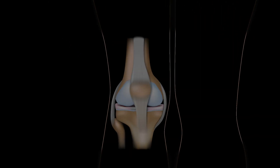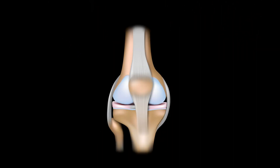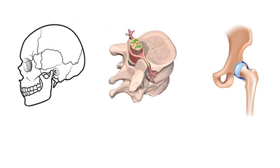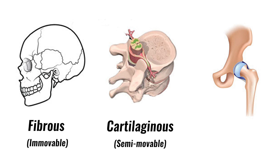A joint is a point where two or more bones meet. There are three main types of joints in the human body: fibrous, cartilaginous, and synovial joints.